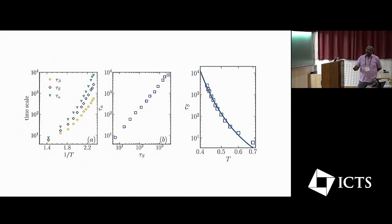So the typical time scales are given by this tau_alpha. This is the dependence between tau_alpha and tau_s.